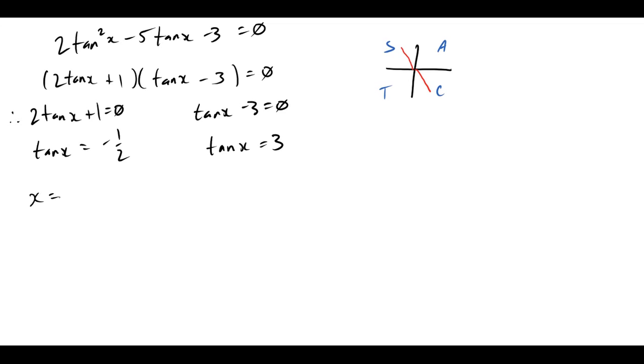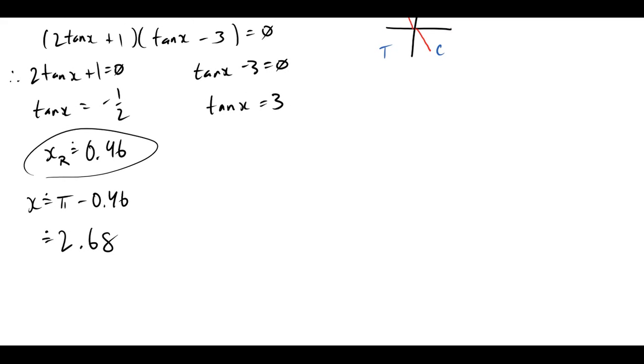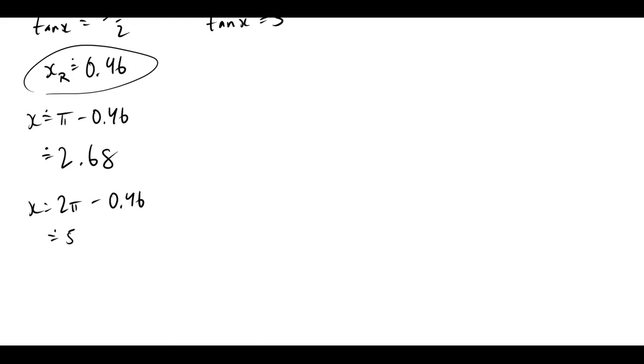So x will equal π minus, or if we want, we can say the related angle is 0.46. So π minus 0.46, which is 2.68. And then my other one would be 2π minus 0.46, and that works out to 5.82.